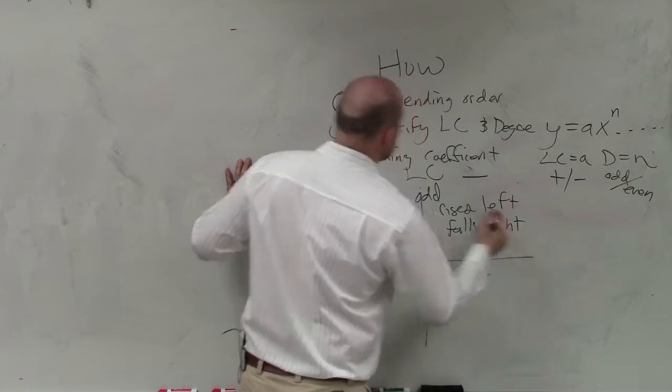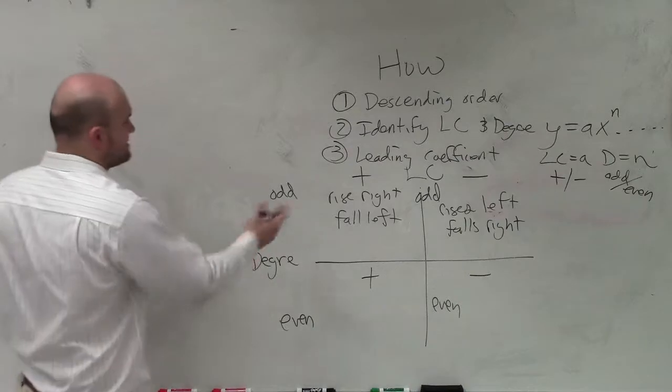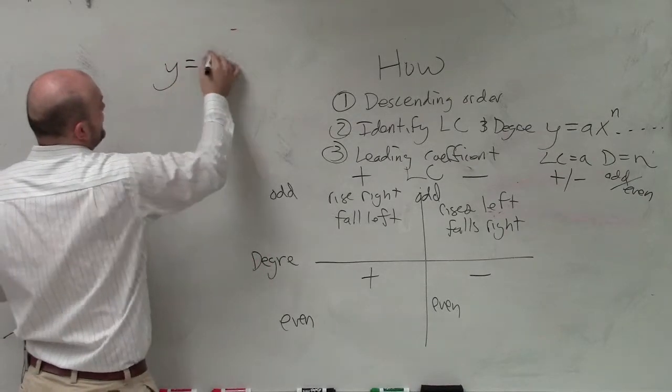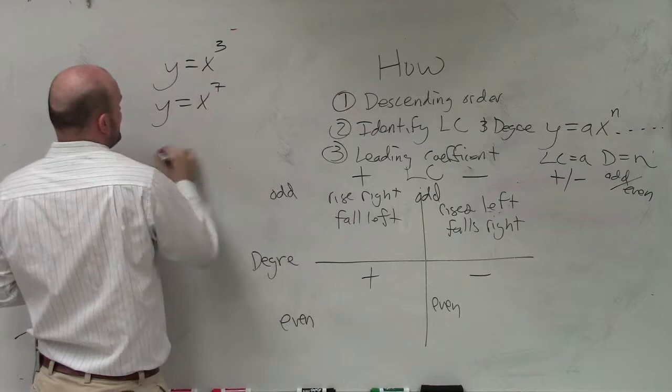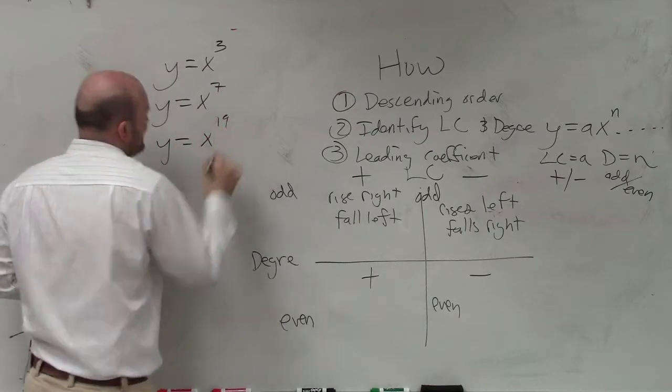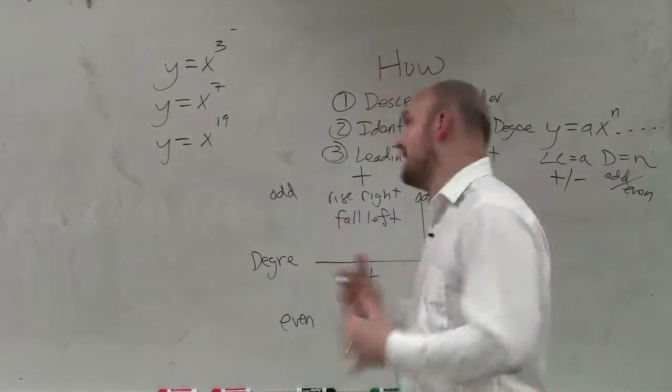And ladies and gentlemen, this is true for all powers. Again, when I say that the degree is odd, that means y = x^3, y = x^7, y = x^19. All of them are going to have the same end behavior.